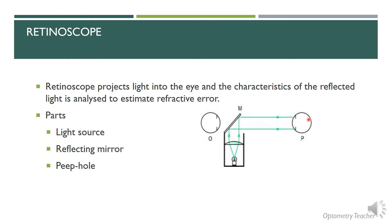Based on the type of retinoscope there could be slight differences, but in principle all retinoscopes should have these three parts: a light source and a mirror to reflect the light into the patient's eye, and a peephole through which you as the examiner observe the retinoscopic light reflex.